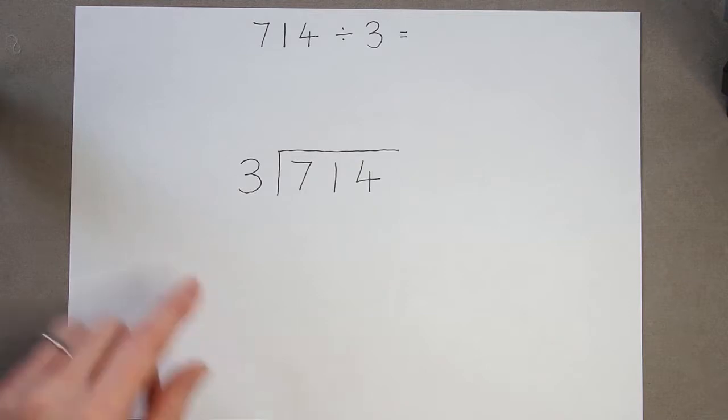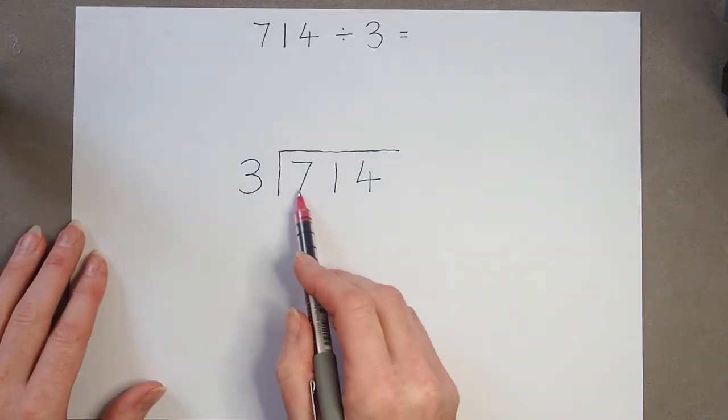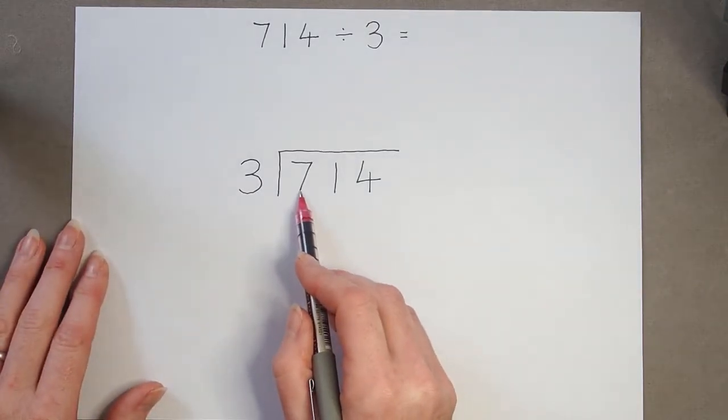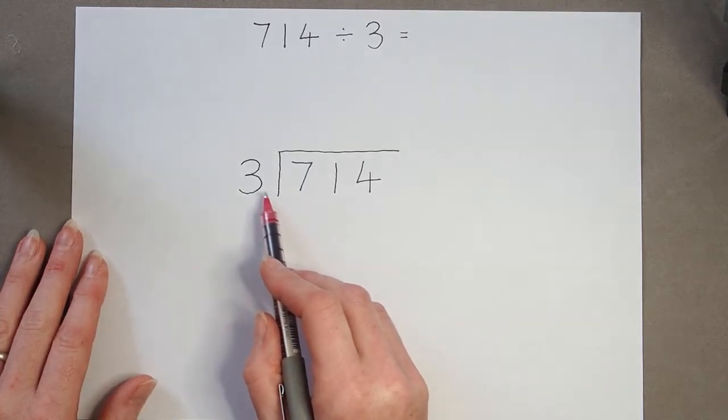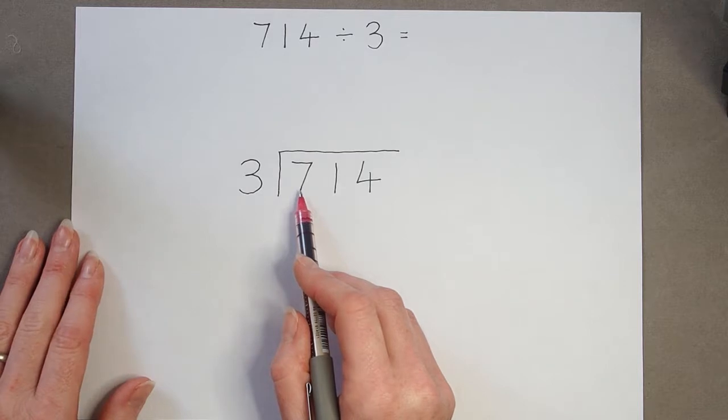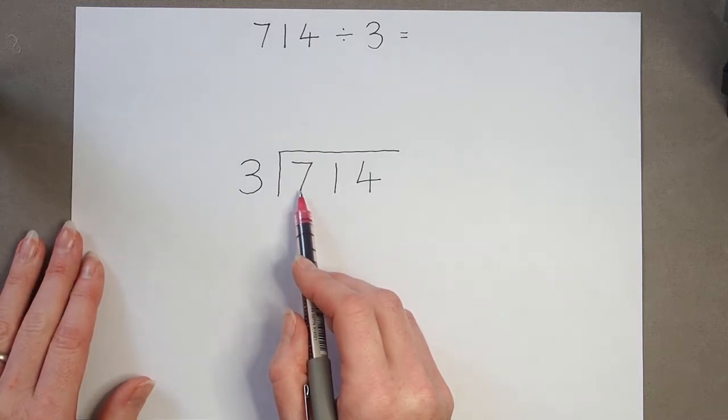So again, I remember to start here. The very first number in the box is 7, so 7 divided by 3. How many 3s are there in 7? It's not going to go exactly.